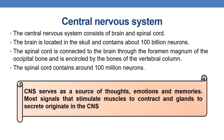The brain contains around 100 billion neurons, whereas the spinal cord contains around 100 million neurons. The CNS serves as a source of thoughts, emotions, and memories. Most signals that stimulate muscles to contract and glands to secrete originate in the CNS.